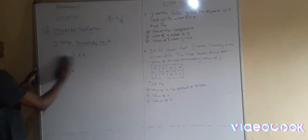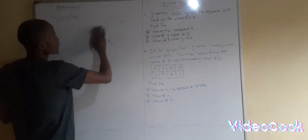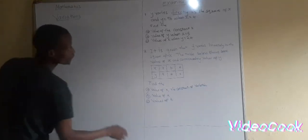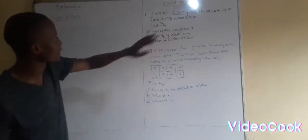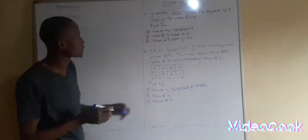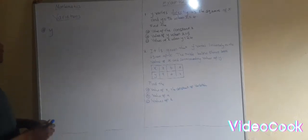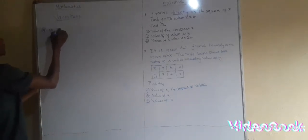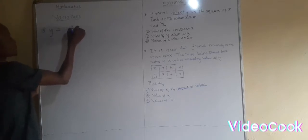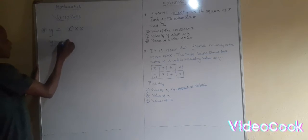The first question reads: Y varies directly as the square of x, and Y is equals to 96 when x is equals to 4. The biggest issue is to come up with the correct equation first. Y varies directly as the square of x — remember, the square of x means x squared — so including the constant of variation k, Y is equals to kx squared.